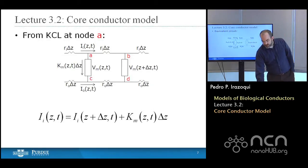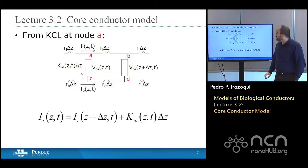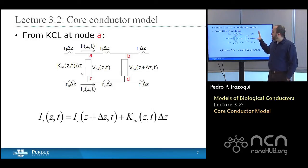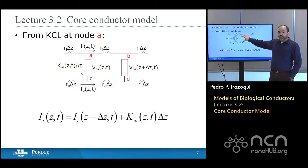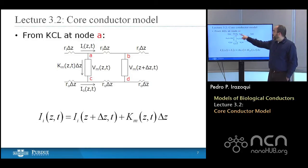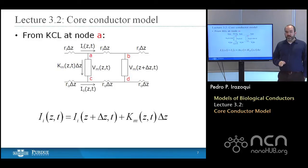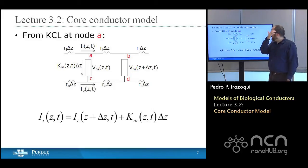The membrane voltage will be evaluated at Z plus delta Z, as will the membrane current, inside current, and outside current. This allows us to label the nodes A, B, C, and D, and apply Kirchhoff's current law.